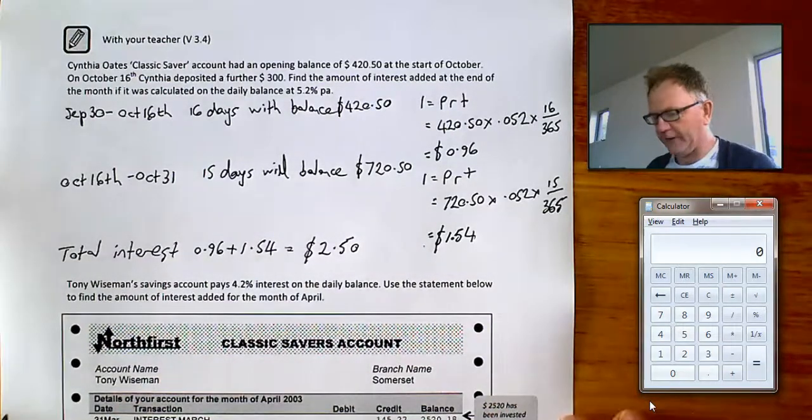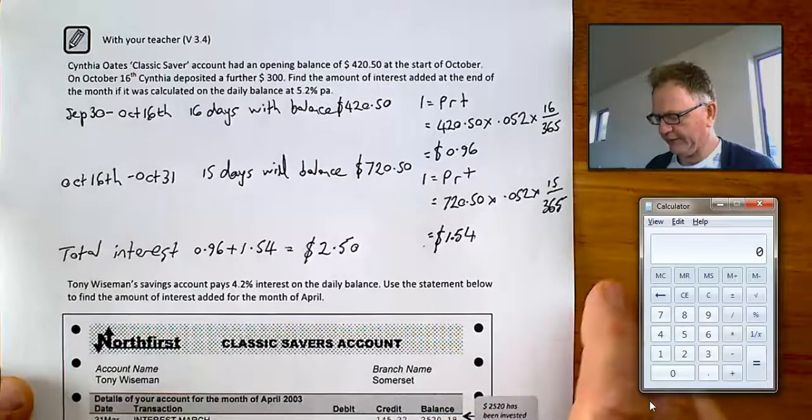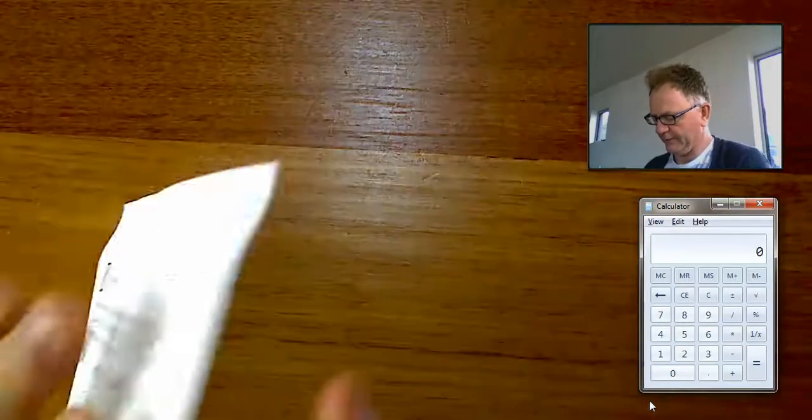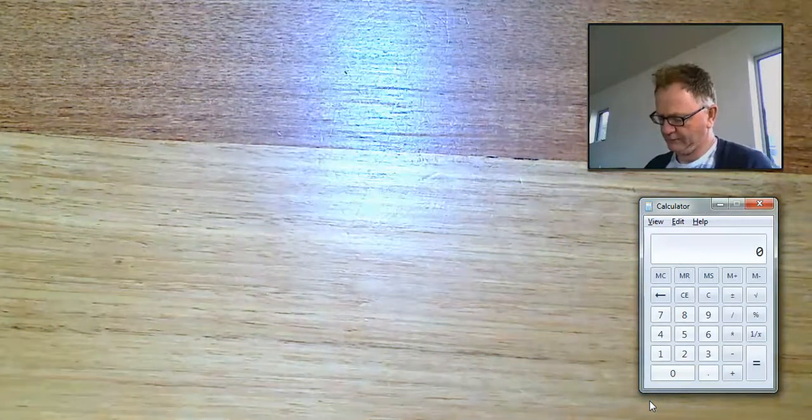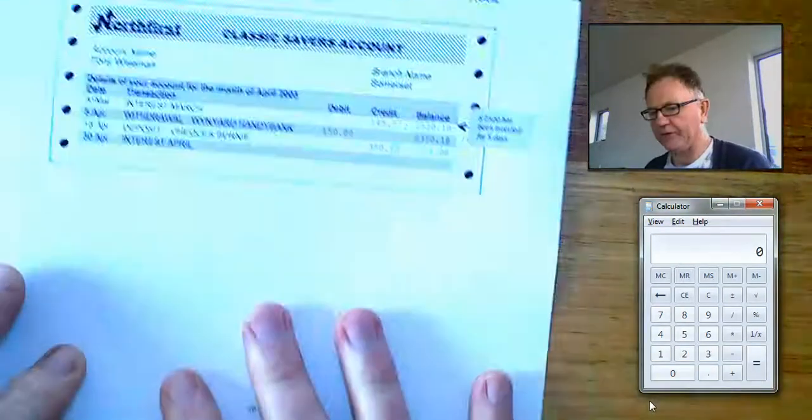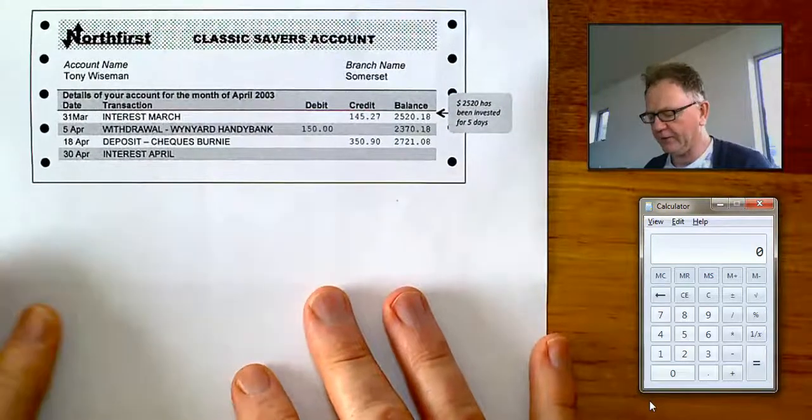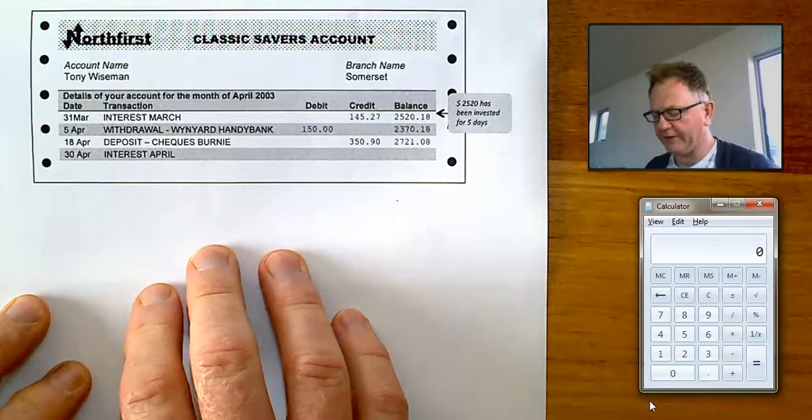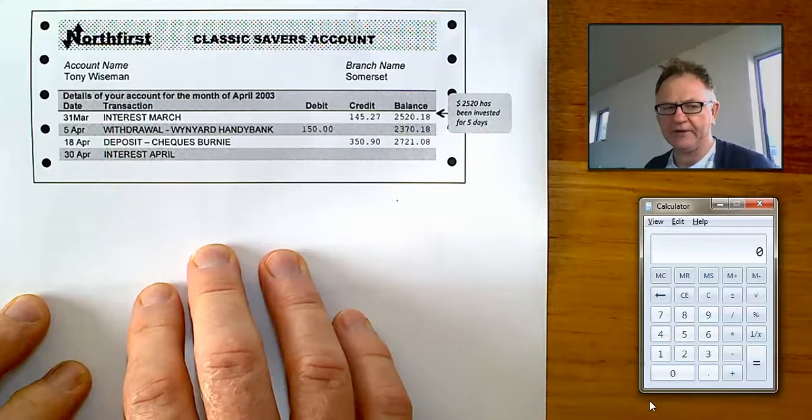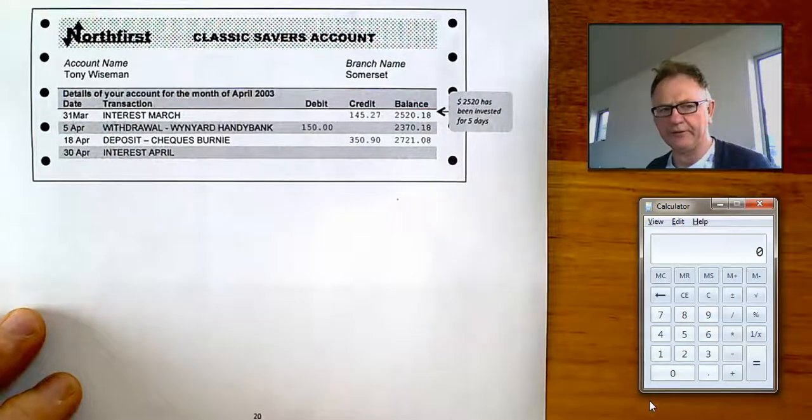Now, in the next example, we're presented with a bank statement. Let's have a look at it. I'll just bring the page up. It's a very similar sort of question. It's just a presentation difference here. What we have to do is work out for how long the account had the different balances in there and then use I equals PRT to work out the total amount of interest.